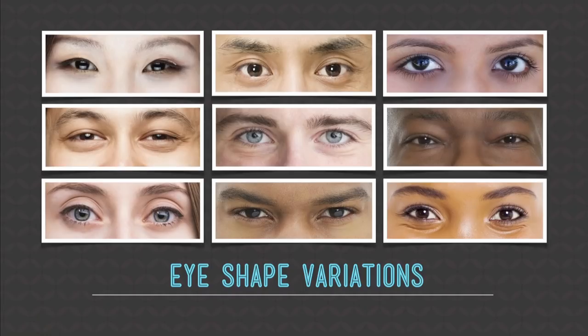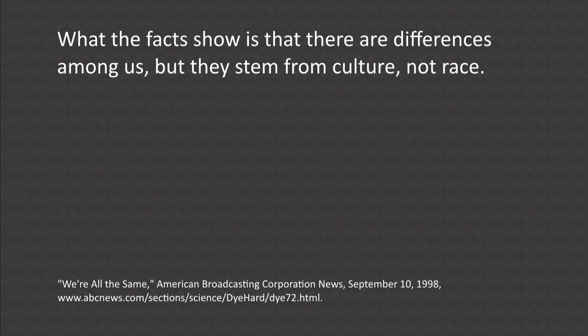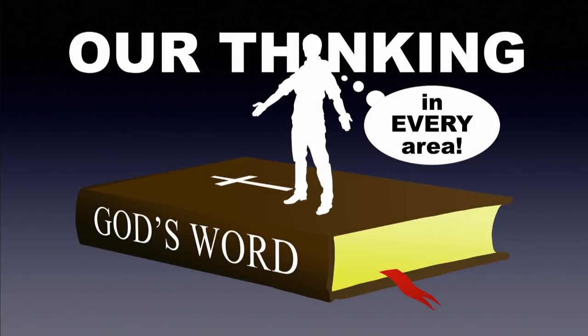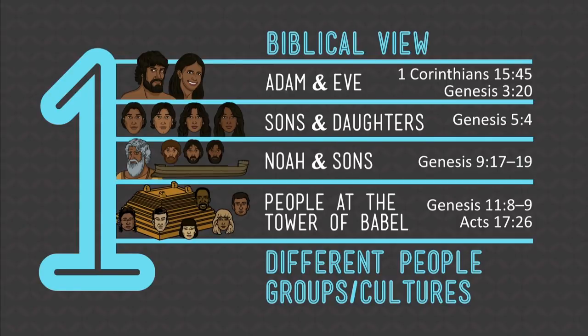Eye shape is similar — one of the major factors is the amount of fat in your eyelids. It's just a minor genetic variation. Even ABC News said in 1998: the facts show there are differences among us, but they stem from culture, not race. The answer to racism is simple — it's the true history of the world. That's the answer to racism.